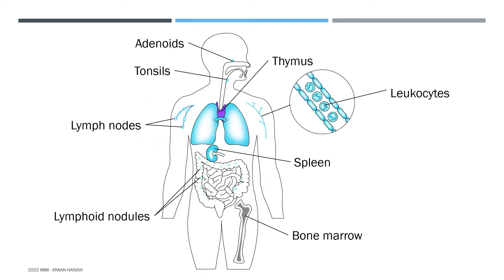In our body we have at least hundreds of lymph nodes. You can think of them as military checkpoints where you find soldiers — the immune cells we talked about last episode. Beside lymph nodes, you can also find lymphoid nodules. Lymphoid nodules are generally larger than lymph nodes, and secondly they are often more encapsulated, meaning they have more tissue layers surrounding them.